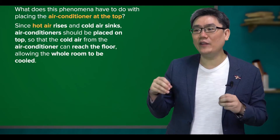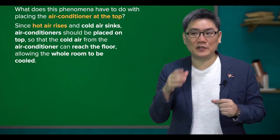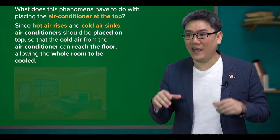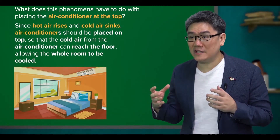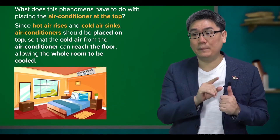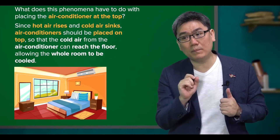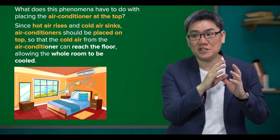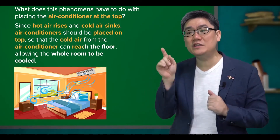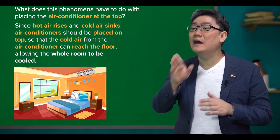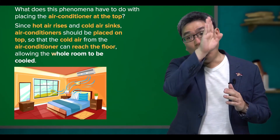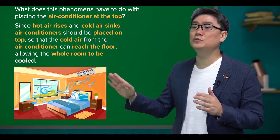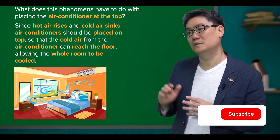Since hot air rises and cold air sinks, air conditioners should be placed on top, so that the cold air from the air conditioner can reach the floor, allowing the whole room to be cooled.